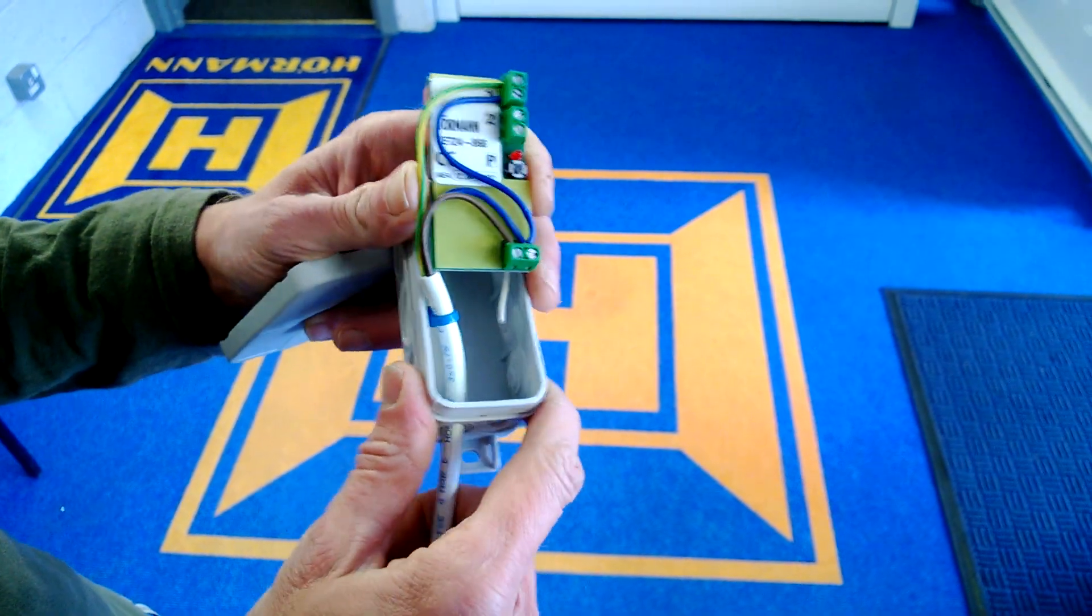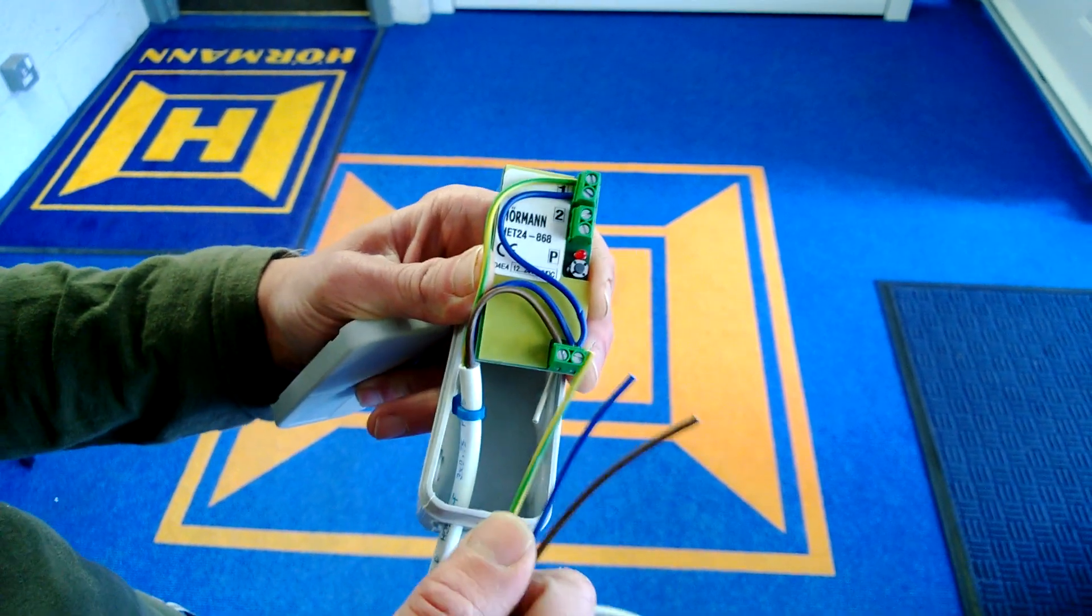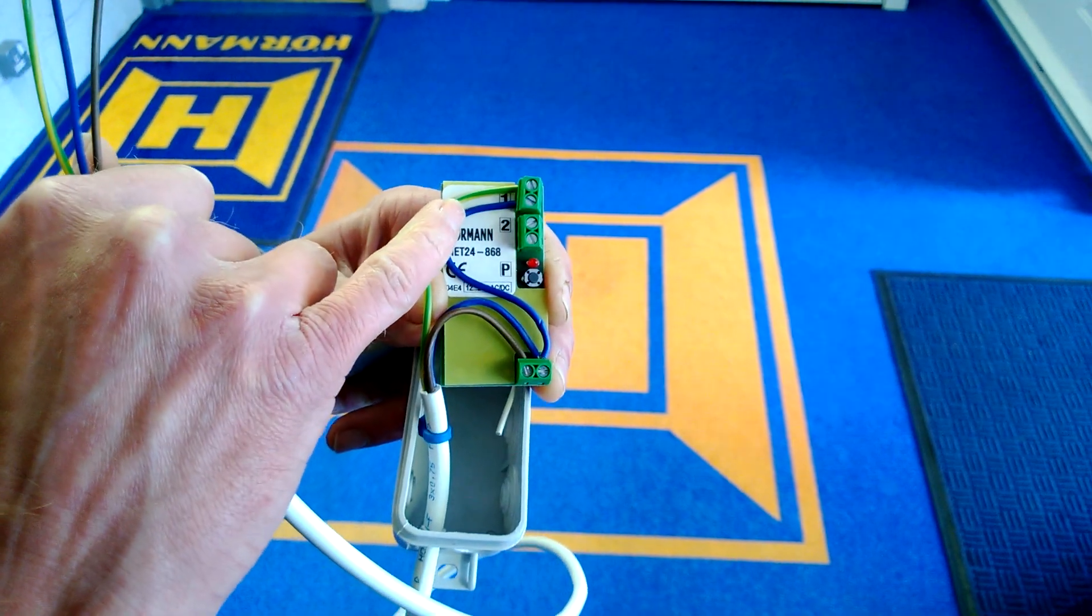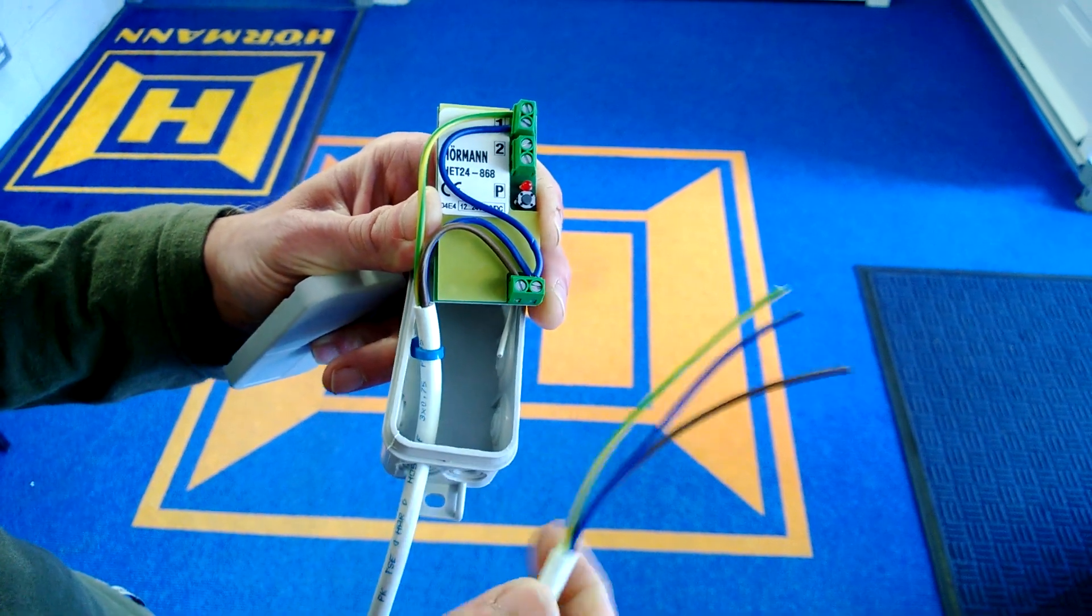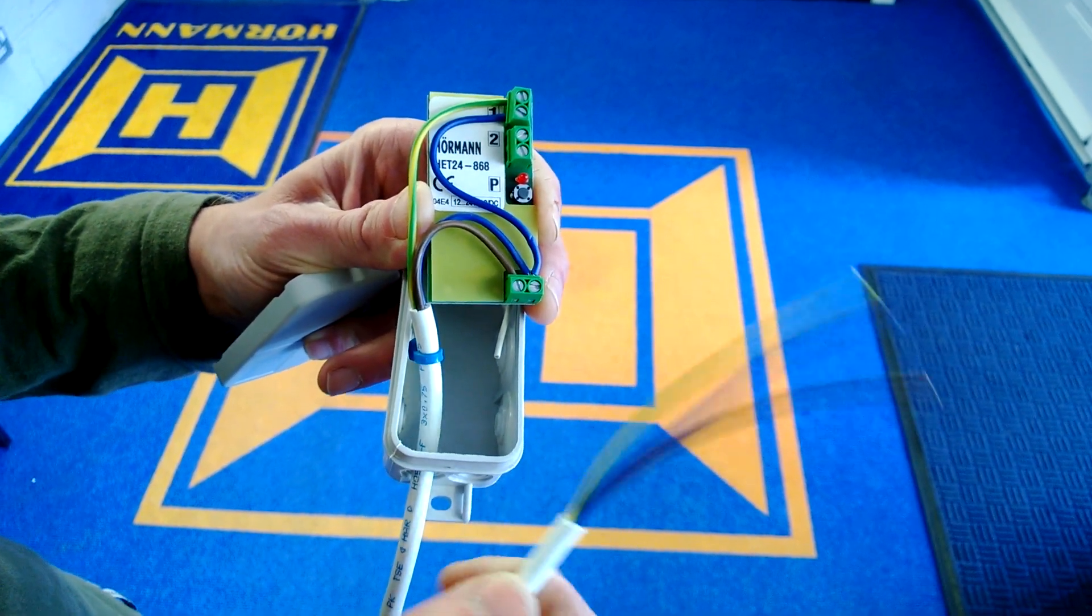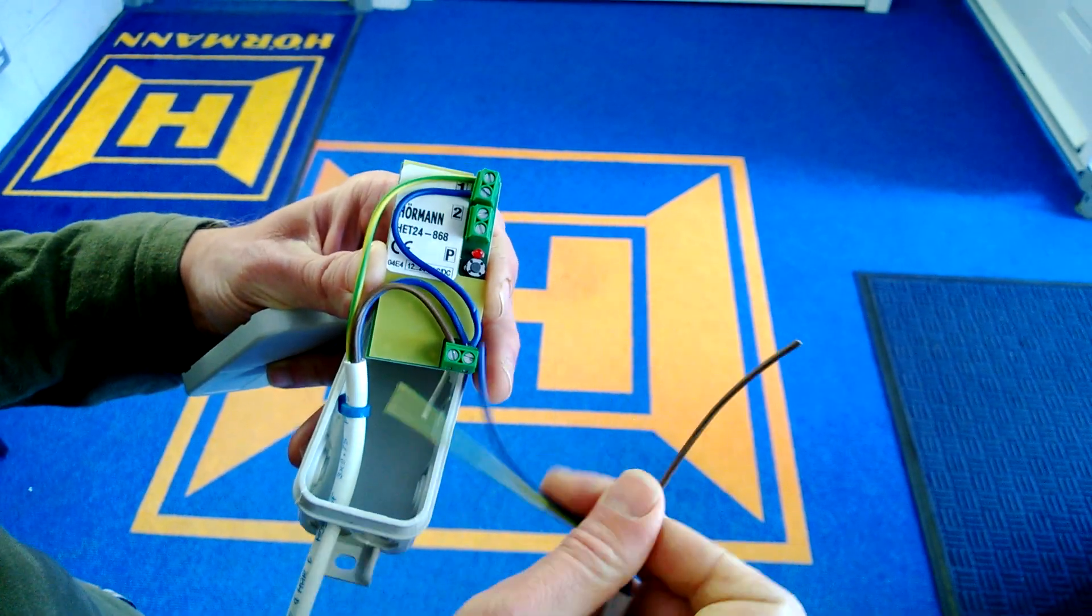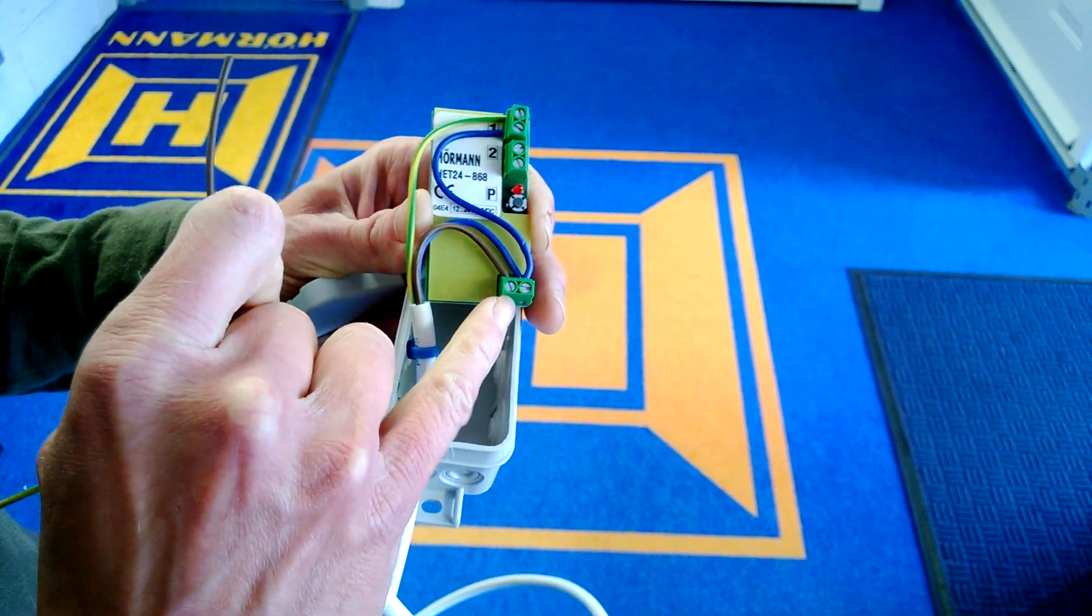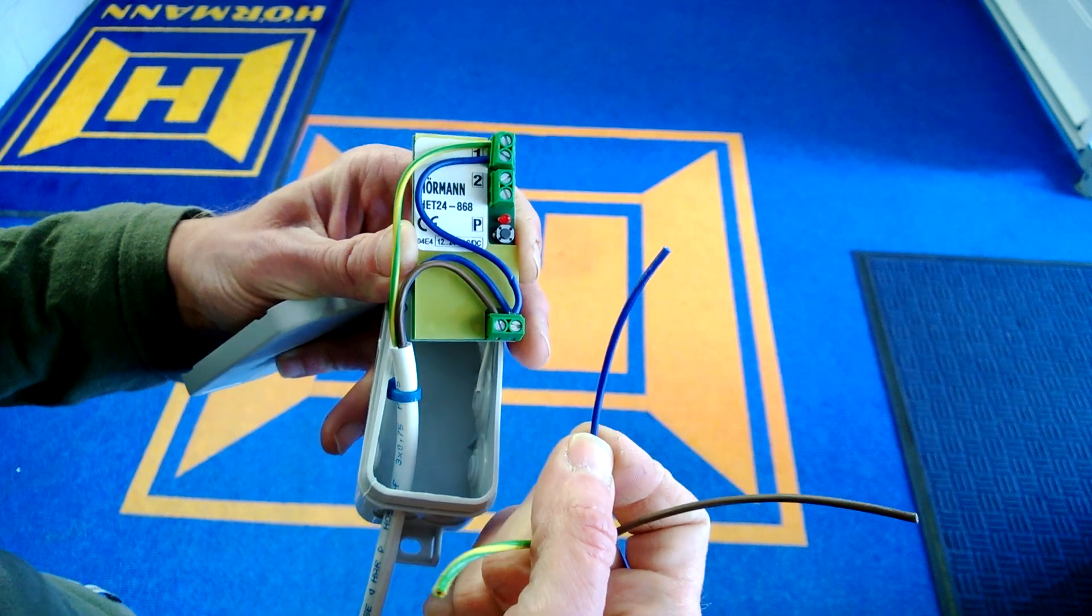Most garage door operators will have three connections rather than four, and they'll share one of the relay contacts with the negative or the zero volt supply. So what we've done here is we've got the plus 12 volts going to one side of the power, and we've got the zero volts, which is sometimes labeled negative on the board, going to the other side of the power.